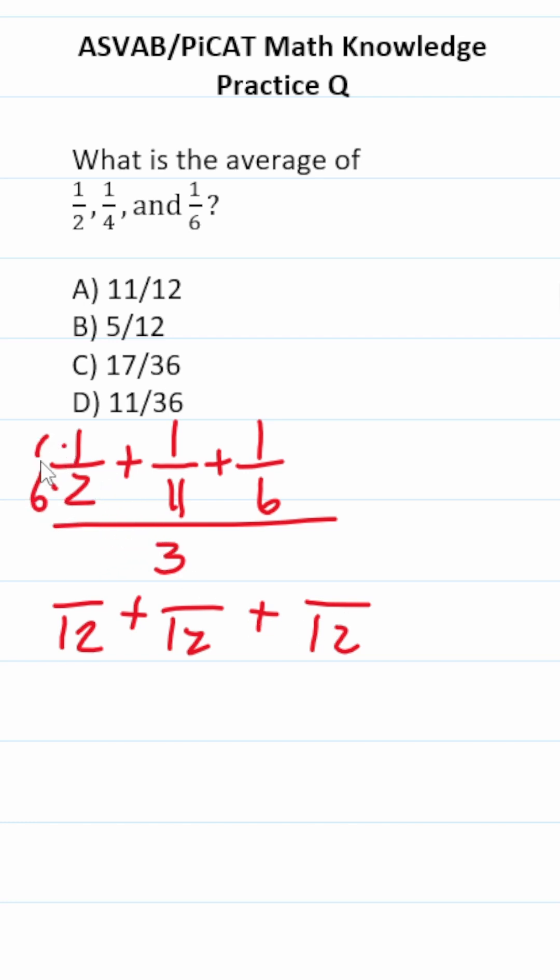To write two as twelve, we multiply it by six, so this becomes six over twelve. We have to multiply this by three, so this becomes three over twelve. We have to multiply this by two. This is two over twelve.